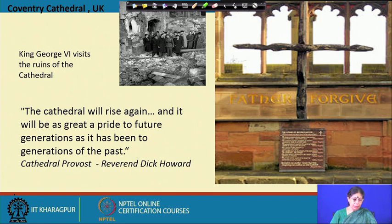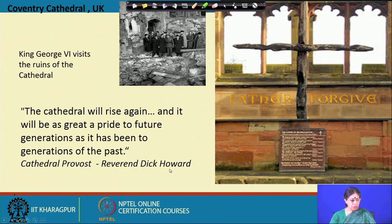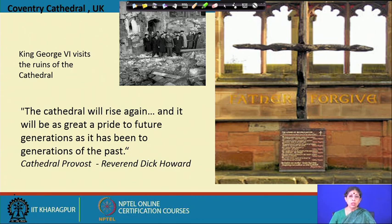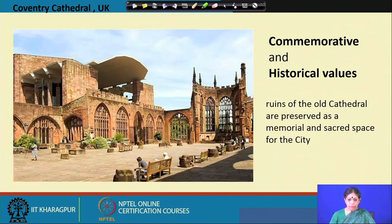Going back to the time after the damage took place, the next morning King George VI visited the site. Quoting from Reverend Dick Howard, who was in charge: 'The cathedral will rise again and it will be as great a pride to future generations as it has been to generations of the past.' They then took two wooden beams from the ruins and put them as a cross, and under that they inscribed 'Father Forgive.' So we are coming back to the debate: what approach has been taken for Coventry Cathedral's conservation, and why?